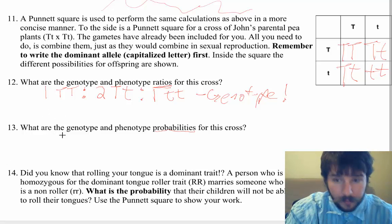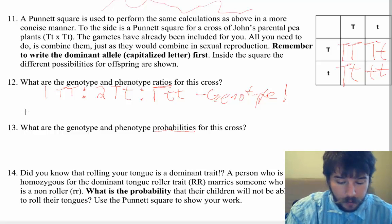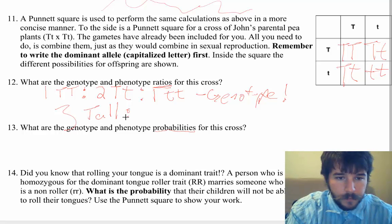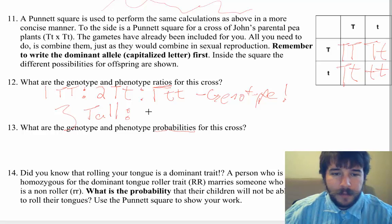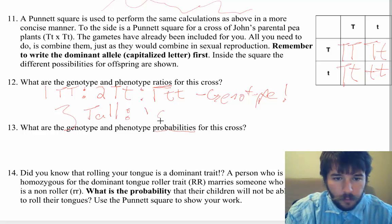Let's do the phenotype ratio. That's pretty easy. Because you're going to have these three here. The big T, big T, the big T, little t, and the big T, little t. All three of those are tall. So your ratio here, you're going to have three that are tall. And then you have your little t, little t. That one is short. So it's one.